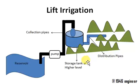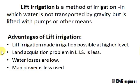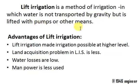This is the definition of lift irrigation: it is a method of irrigation in which water is not transported by gravity, but is lifted with pumps or other means.